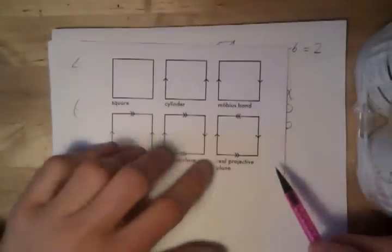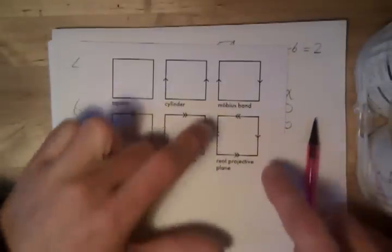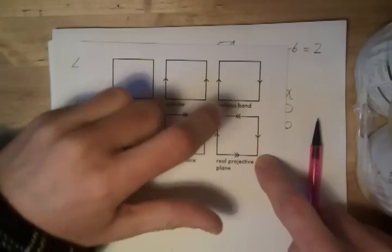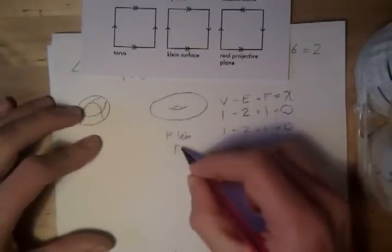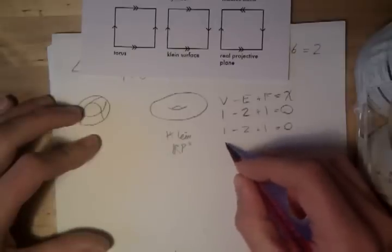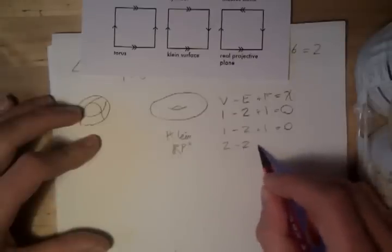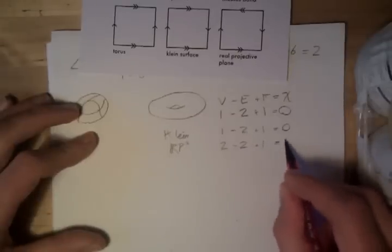Let's look at the projective plane. So, this is, that vertex is equal to that vertex, and that vertex is equal to that vertex, but that is not equal to that. So, that is equal to two vertices and two edges and one face. So, the Euler characteristic of the projective plane is one.